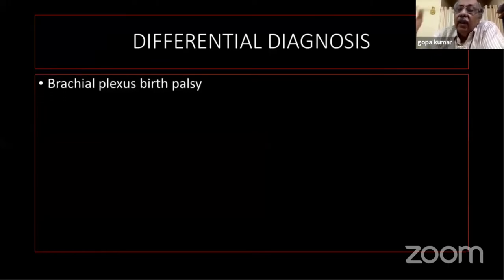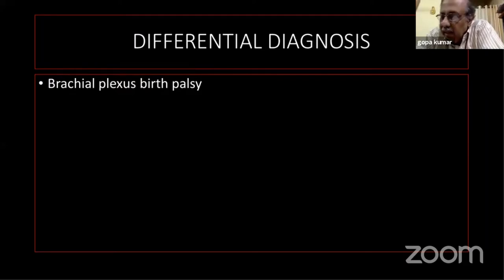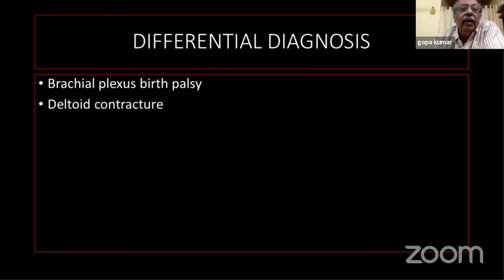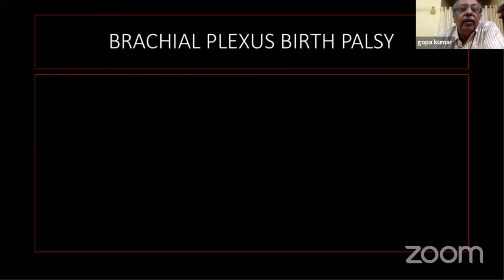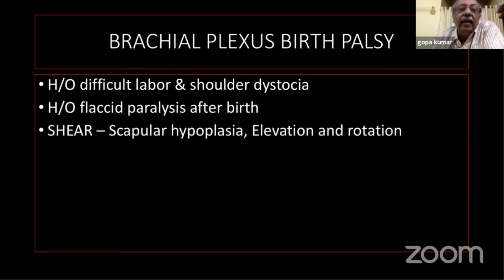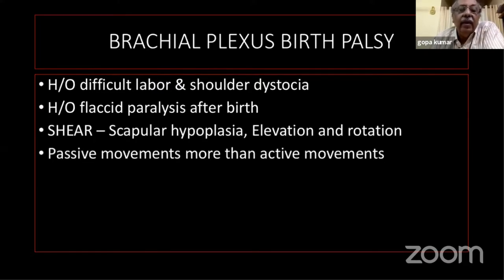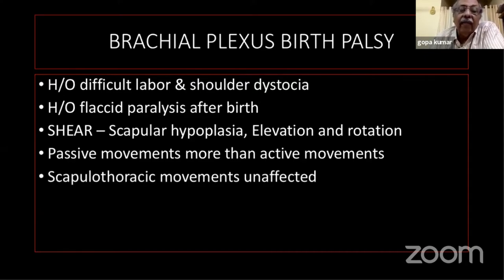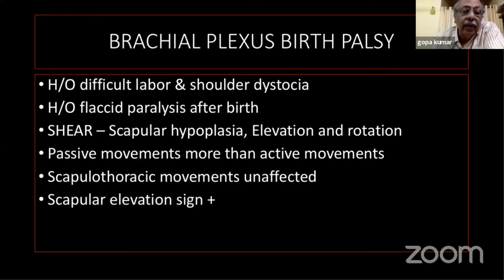Investigations: X-ray alone is usually sufficient to make the diagnosis. Look for the elevated and broadened scapula, rotated scapula, and the omovertebral bone. 3D CT helps visualize the scapular shape and omovertebral bone clearly. MRI can identify fibrous and cartilaginous components of the omovertebral bar, and is important for screening the spine for spinal dysraphism, especially diastematomyelia at lower levels. In severe cases of Sprengel's shoulder there is no differential diagnosis, but in mild cases you must exclude: brachial plexus birth palsy — where there is a history of difficult labor, shoulder dystocia, and flaccid paralysis after birth. In brachial plexus palsy, passive movements exceed active movements, scapulothoracic movements are unaffected, and the scapular elevation sign is positive.